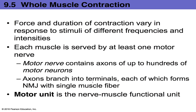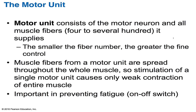Force and duration of contraction vary in response to stimuli of different frequencies and intensities. Each muscle is served by at least one motor nerve, and the motor nerve contains axons of up to hundreds of motor neurons. The axon branches into terminals, and each ends up forming a neuromuscular junction with single muscle fibers. The motor unit is the nerve-muscle functional unit, consisting of a motor neuron and all the muscle fibers it supplies — anywhere from four to several hundred muscle fibers. The smaller the fiber number, the greater the fine control.